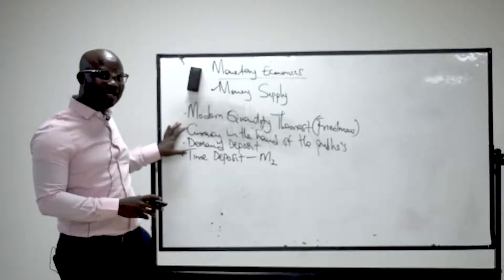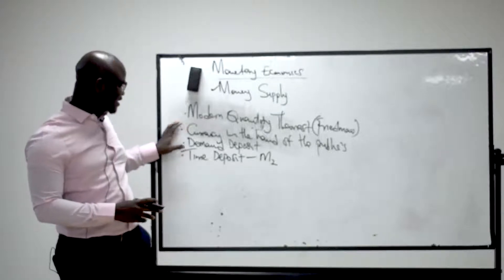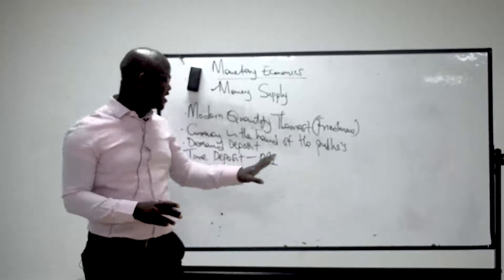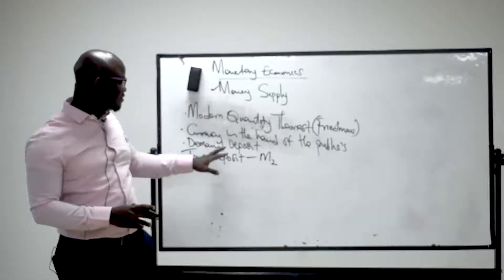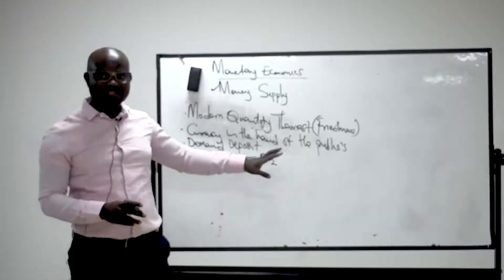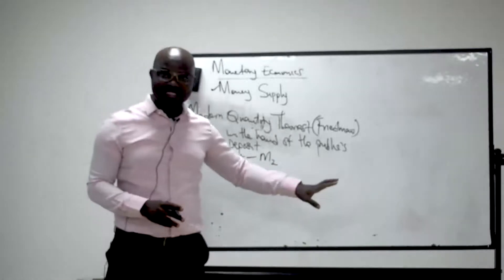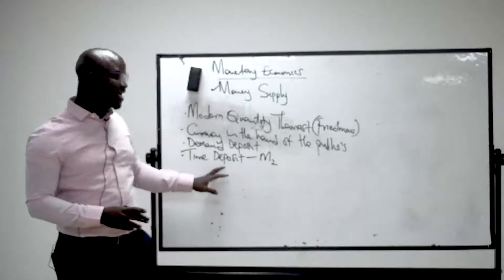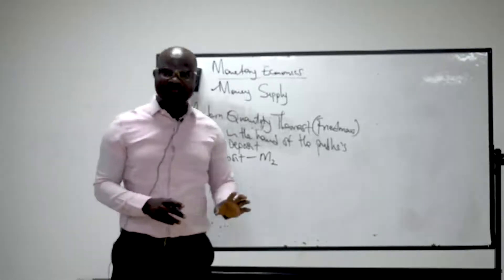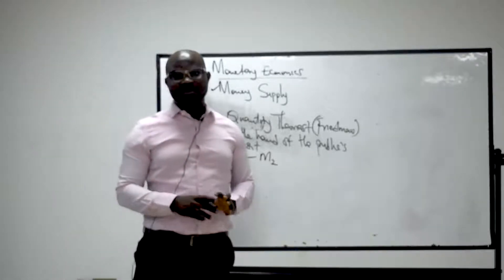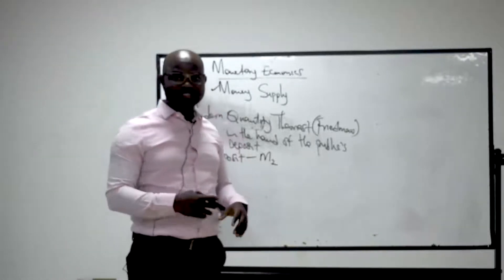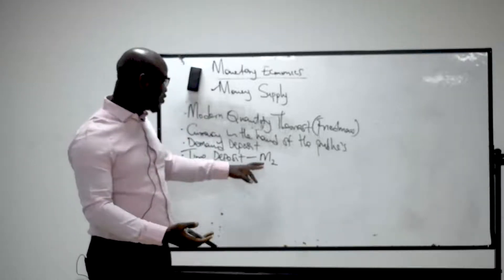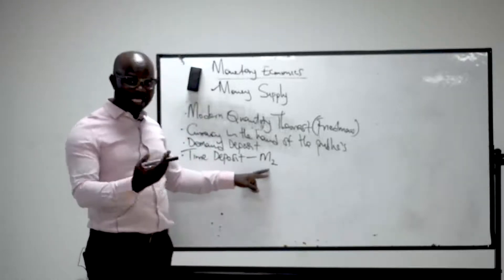To determine money supply in Nigeria, we use the currency in the hands of the public plus the demand deposit — which equals savings account and current account — and the time deposit, which equals the fixed deposit of the customer with the commercial bank. We call this M2.